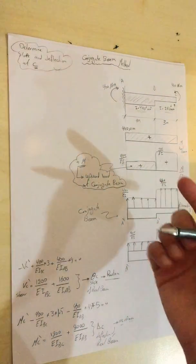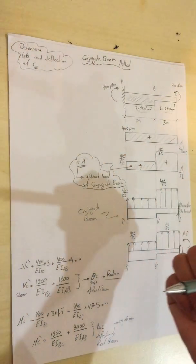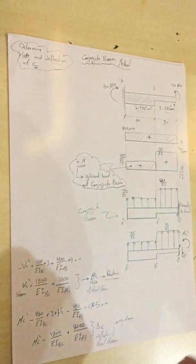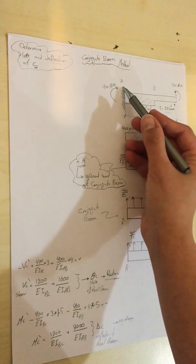As we know, the shear of the conjugate beam will make the slope for the real beam, and the moment of the conjugate beam will make the deflection of the real beam. This is a fixed end and this is a free end.